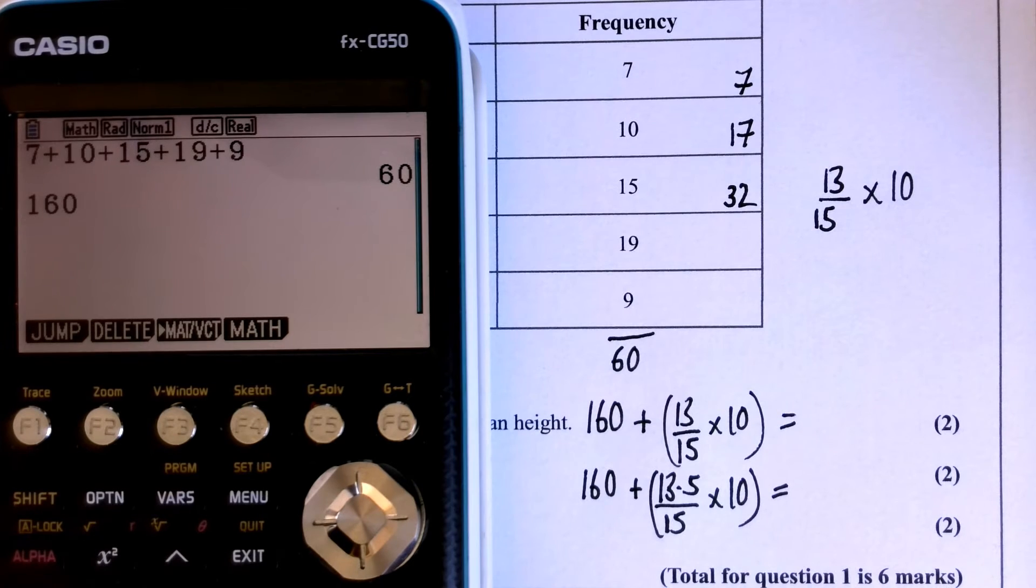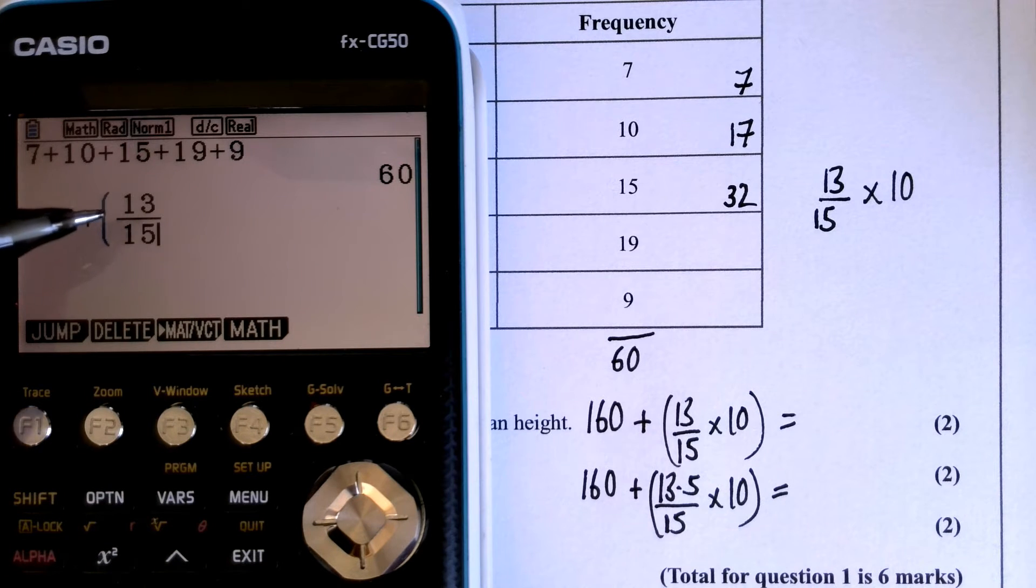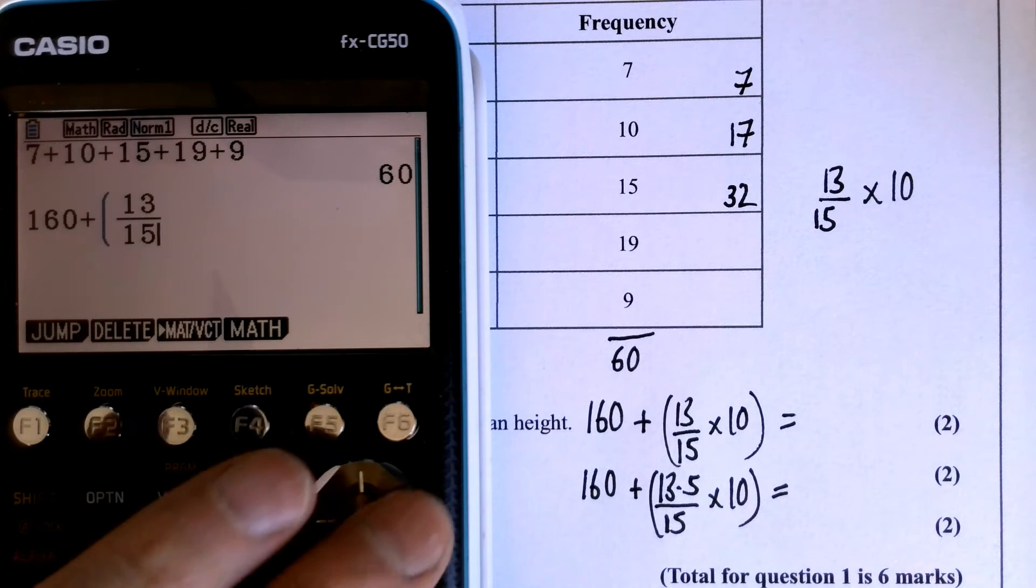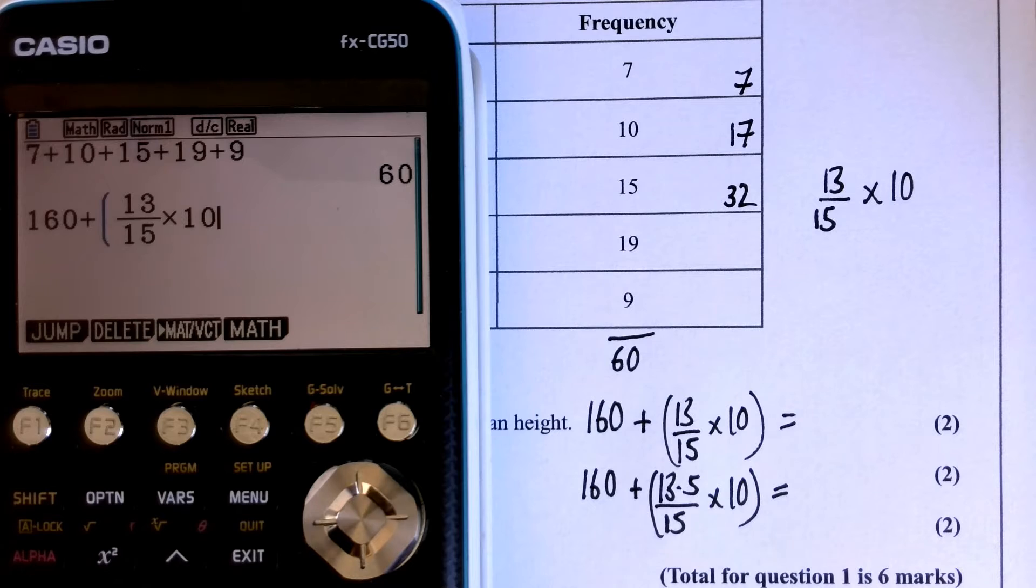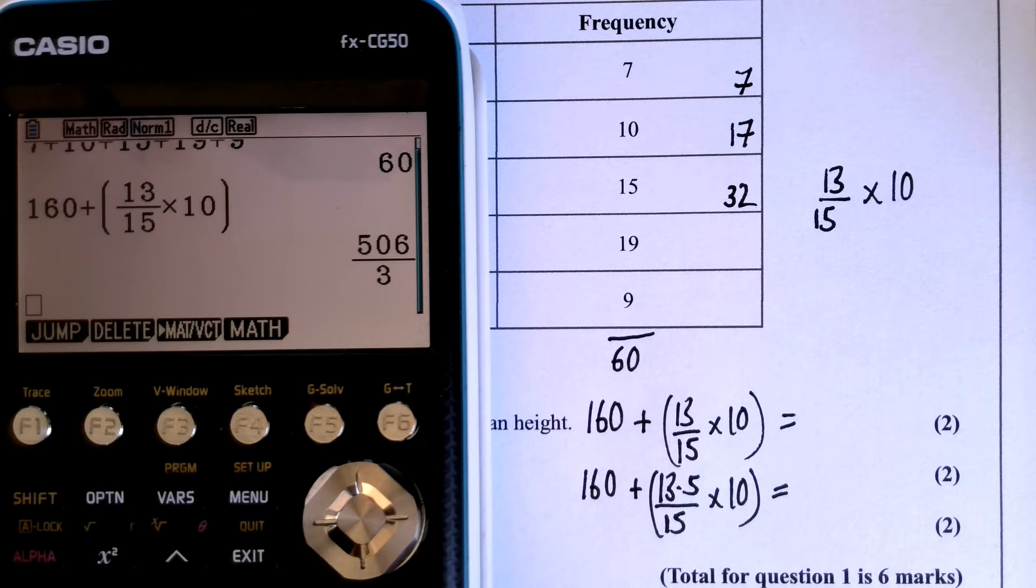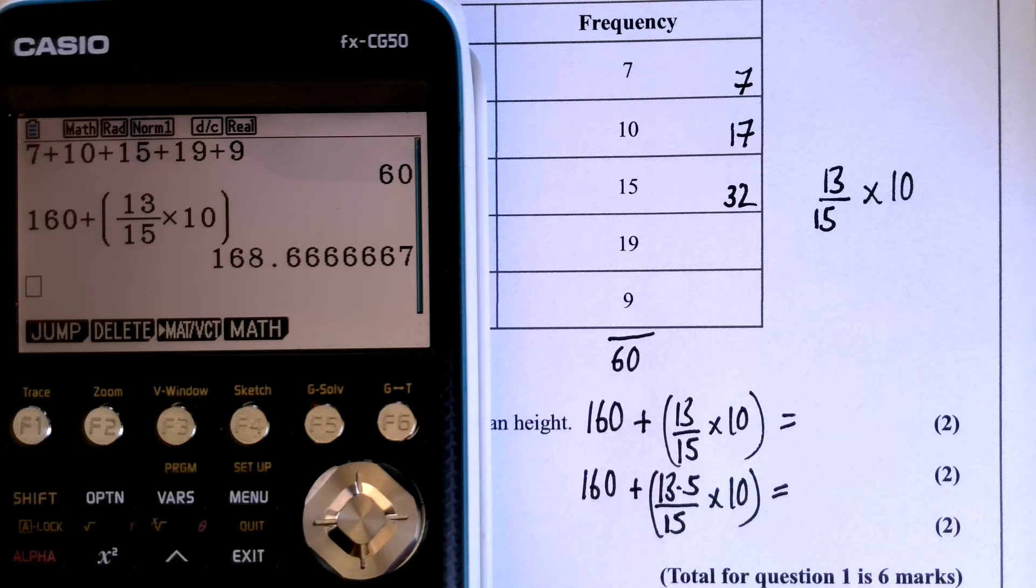And remember, if you'd used n plus 1 over 2 to find the median, you would have just done 160 plus 13.5 over 15 times 10, which is just as fine. I'm only using 13 because it's a bit easier and it barely makes any difference. So I'm going to work that one out, and I've got 160, which was the end of the previous group, plus—and this is how far into this next group I need to go—13 out of 15 times 10, which is the width of that group.